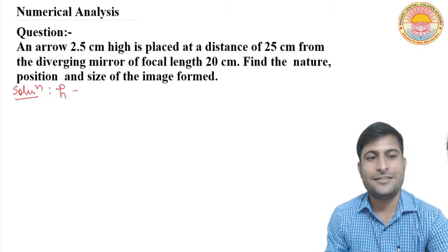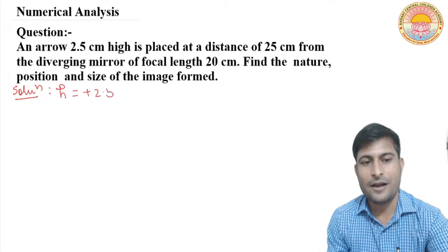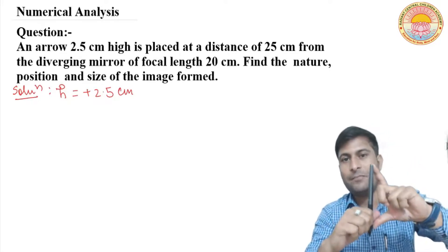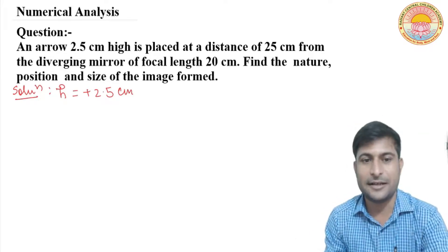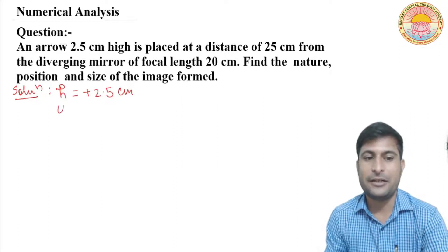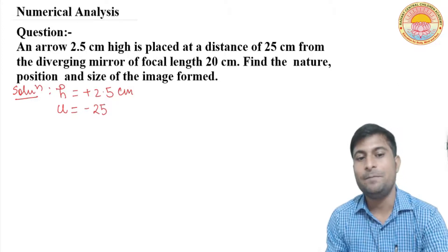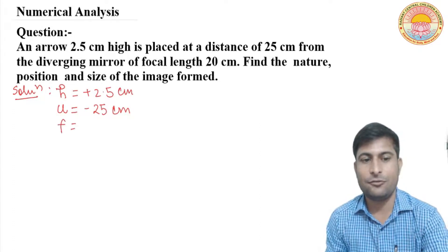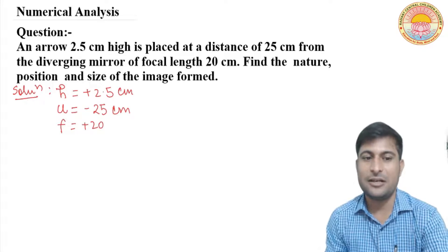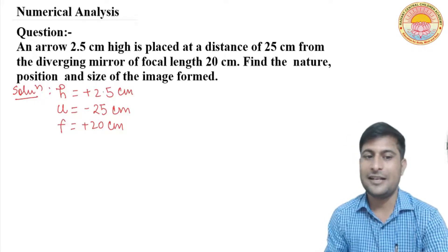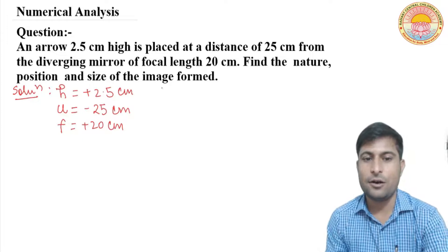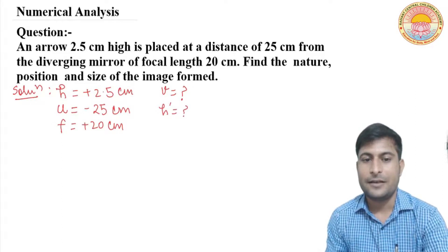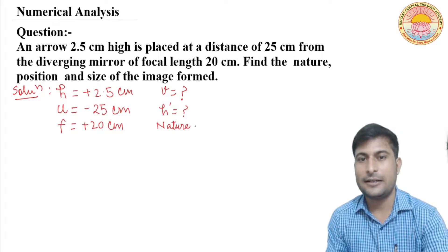Solution — given: h equals plus 2.5 cm (object height; upward height is taken as positive). Object distance u equals minus 25 cm, because the object is always placed on the left-hand side and left-side convention is negative. Focal length f equals plus 20 cm, since it is a convex (diverging) mirror and its focal length is on the right side. We have to find: v, h-dash (image height), and the nature of the image.